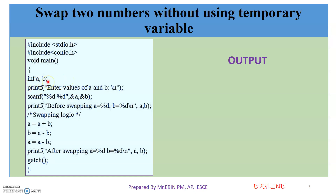In the previous video, we were using temporary variables. But here, we are using only A and B to swap the values.